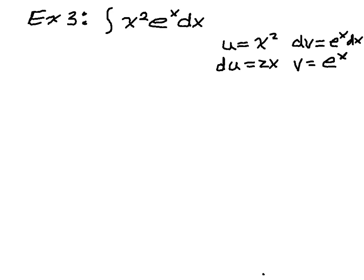So now, I know that my original integral is going to be equal to u times v, so x squared e to the x, minus the integral of v, which is e to the x, times du, which is 2x dx.